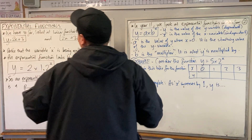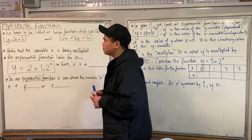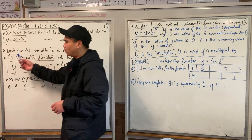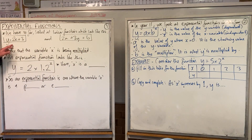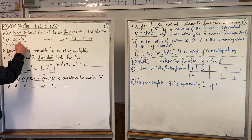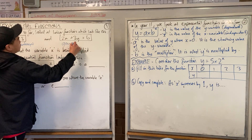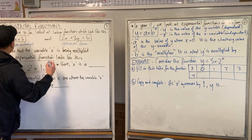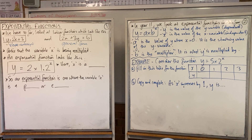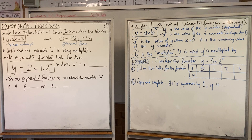Alright, everything that we've done so far has looked at linear functions, which look like this. Can someone tell me what form this line equation is in? And what was this one in? General form. What do you notice about the variable x — what are we doing with it? We're multiplying x, because the sign in algebra that we don't write between 2 and x is 'times.'